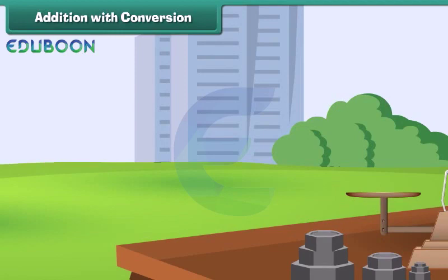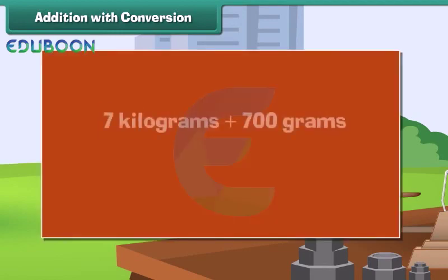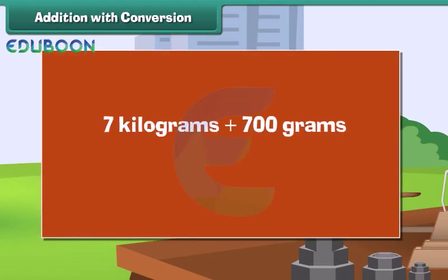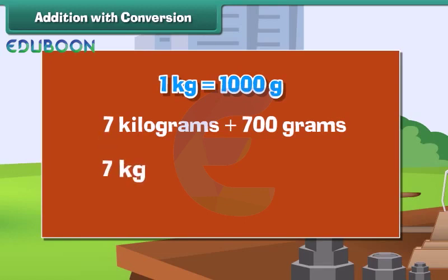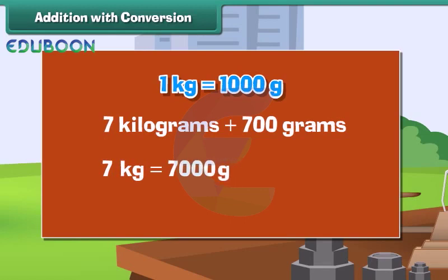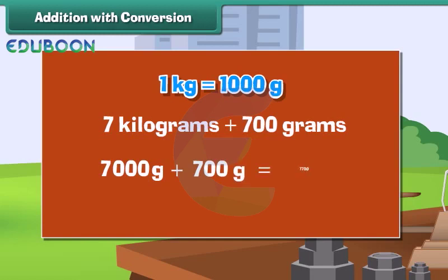Addition with conversion. Let us now add 7 kilograms with 700 grams. Let us first convert kilograms into grams. 1 kg is equal to 1000 grams. So, 7 kg is equal to 7 into 1000 grams, which equals 7000 grams. Therefore, 7 kg plus 700 grams equals 7000 grams plus 700 grams, which equals 7700 grams.